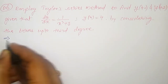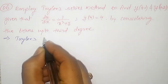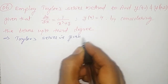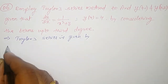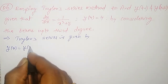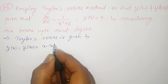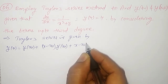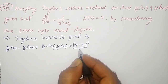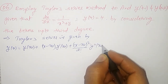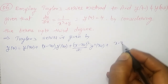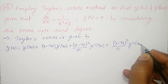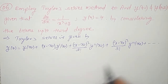The Taylor series up to third degree is given by: y(x) = y(x₀) + (x − x₀)·y'(x₀) + (x − x₀)²/2! · y''(x₀) + (x − x₀)³/3! · y'''(x₀) + so on.